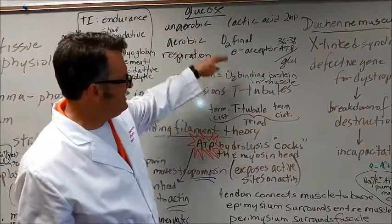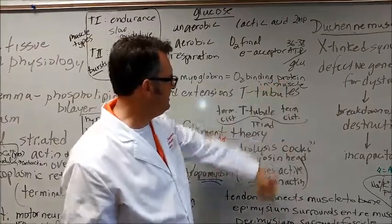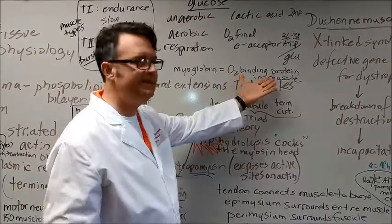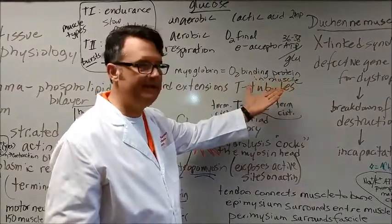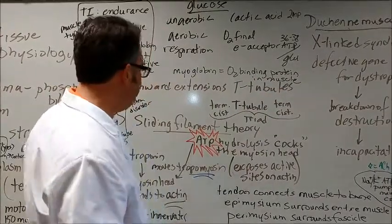Remember that myoglobin is the oxygen binding protein in muscle. I hope I spelled protein correctly. I before E except after C. I don't know. Is this right? Protein? P-R-O-T-E-I-N. Everybody's laughing. It's probably wrong. Anyhow.